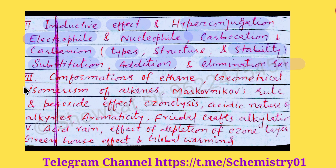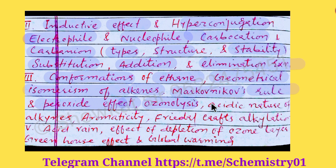The next very important chapter is Hydrocarbons. You will study conformations of ethane — staggered and eclipsed forms. Then geometrical isomerism of alkenes — cis and trans. The very important Markovnikov's rule and the peroxide effect (anti-Markovnikov's rule), the mechanism, and ozonolysis reaction. The acidic nature of alkynes — which is more acidic and which is less. Then aromaticity: Hückel's rule and the very important reactions of benzene — Friedel-Crafts alkylation, acylation, nitration, and sulfonation.